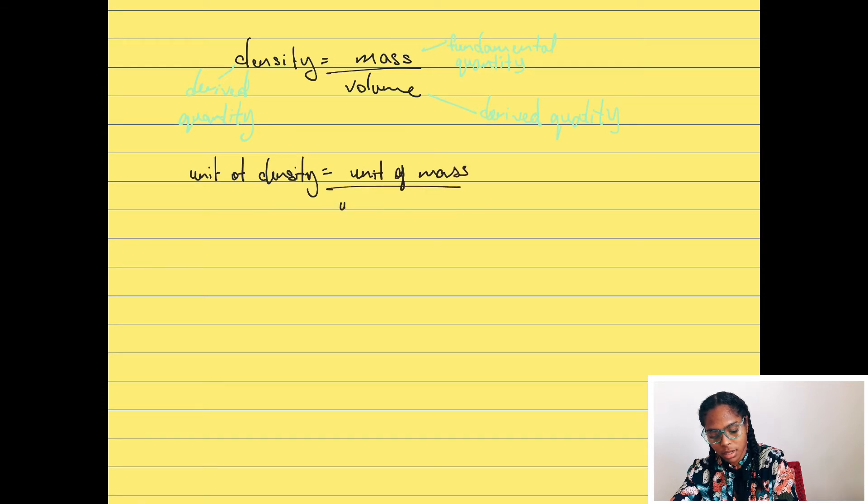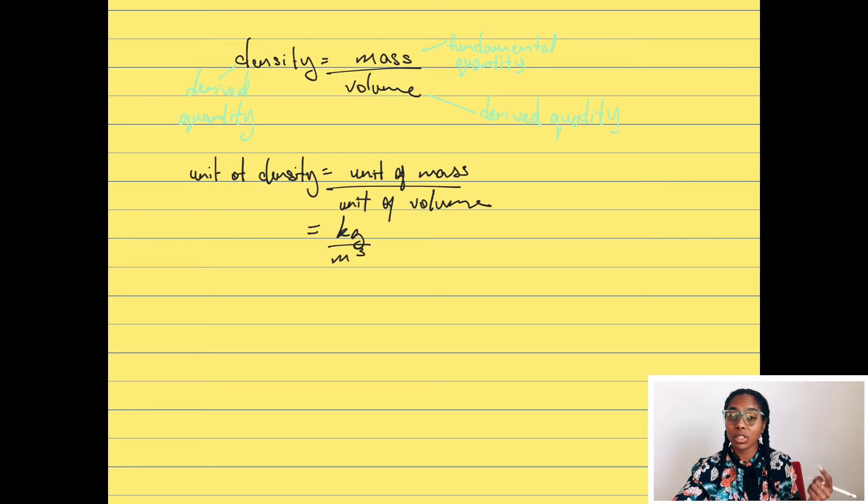So the unit of mass, if we think back, is kilograms. And the unit for volume is meters cubed. So therefore, the unit for density is kilograms per meters cubed. Make sense?